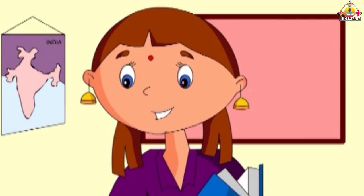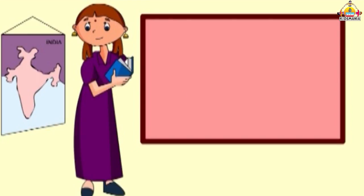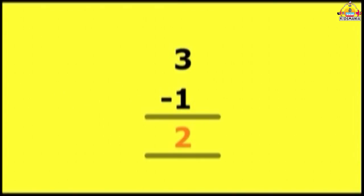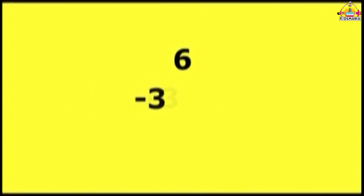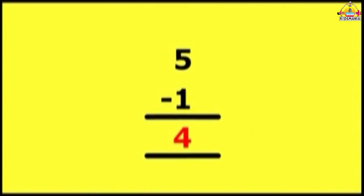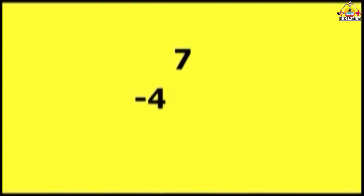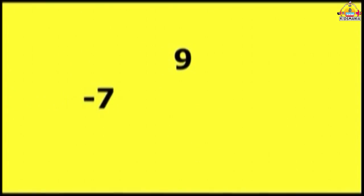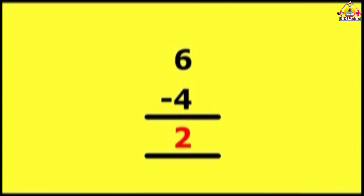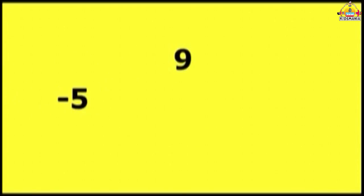Now, column method. Let's learn the subtraction by column method. Look at it. 3 minus 1: 2. 6 minus 3: 3. 5 minus 1: 4. 8 minus 4: 4. 7 minus 4: 3. 4 minus 3: 1. 9 minus 7: 2. 6 minus 4: 2. 7 minus 2: 5. 9 minus 5: 4.